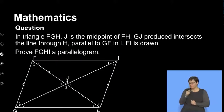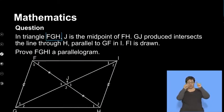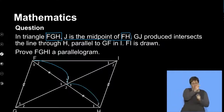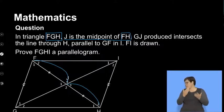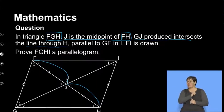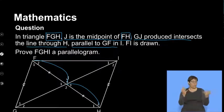In triangle FGH, J is the midpoint of FH. J being the midpoint of FH makes FJ equal to JH — that's one important fact, and we might be talking about diagonals. Then they say J produced intersects the line through H, which is a straight line, and that line is parallel to GF at I.